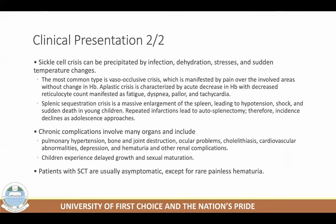Another important crisis is splenic sequestration. In splenic sequestration, you have massive enlargement of the spleen, hypotension, shock, and sudden death in young children. Where patients survive, repeated infarctions lead to autosplenectomy — a condition where the spleen becomes almost useless and no longer carries out its regular physiologic process. Even though the patient appears to have recovered, if you check, you'll find that the spleen has actually stopped functioning.